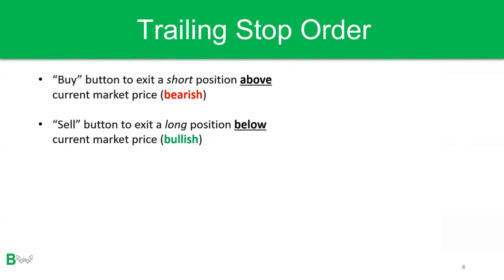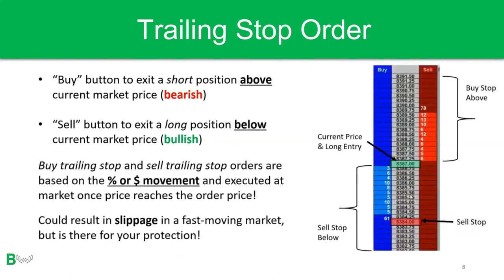Another order type — not very commonly used depending on your strategy — is the trailing stop order. It works the same as a stop order: if you are in a short position, you place the stop above the current market price; if you're in a long position, you place a sell stop below. Buy and sell trailing stops are based on the percent or dollar movement of the underlying instrument you are trading and are executed at market once price reaches the order price. These orders could result in slippage in a fast-moving market, but they are there for your protection.